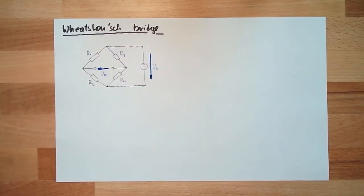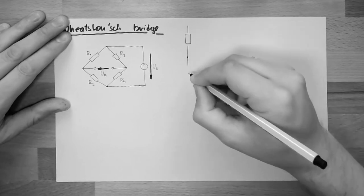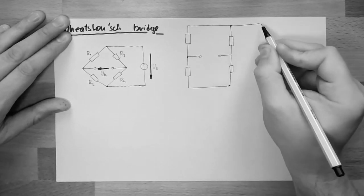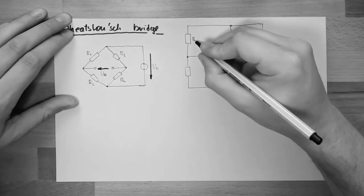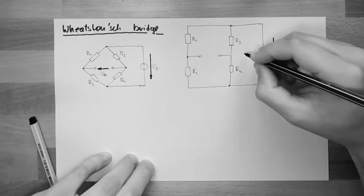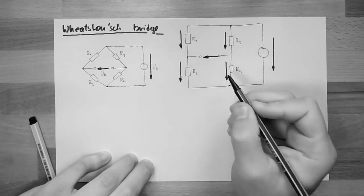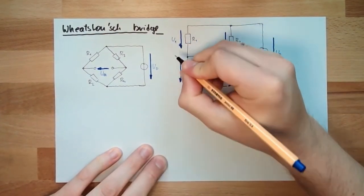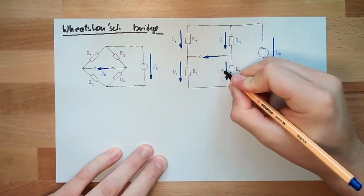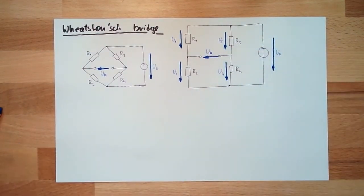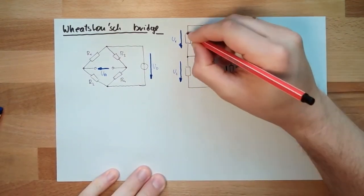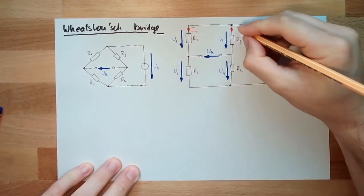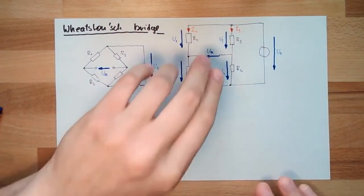For better explaining, I will redraw this now. I have also drawn in the voltages of the resistors: U1, U2, U3, U4, and application voltage UA. And then we also have currents running. This one I call I1 because it's running through R1, and this one I call I3 because it's running through R3.